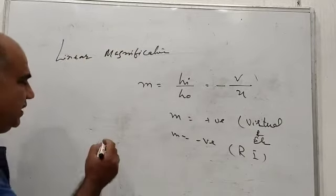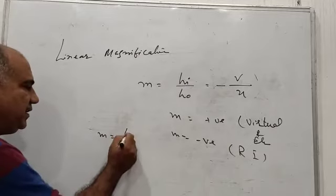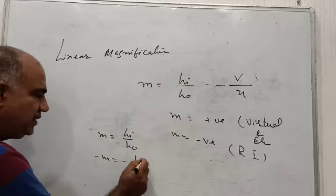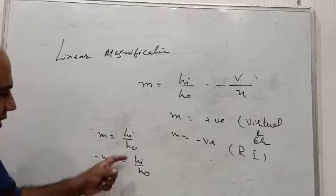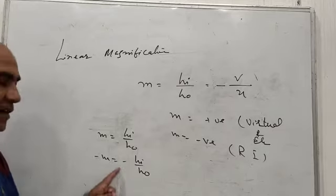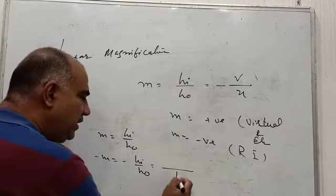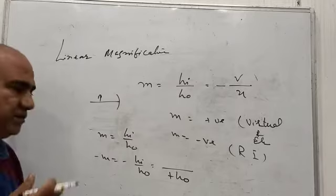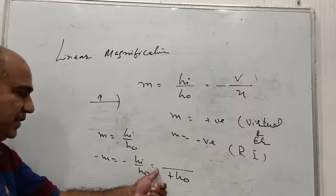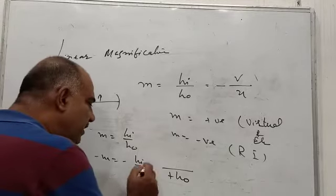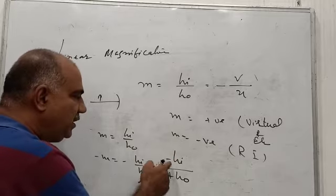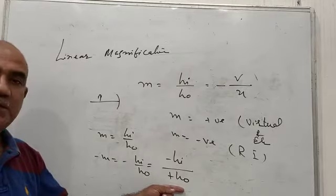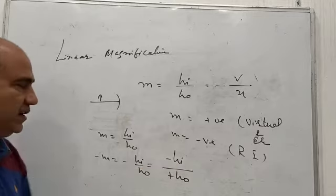Why is this so? Let's see. M equals HI upon HO. If M is negative, then HI upon HO is negative. The only thing to note here is that HI upon HO is a fraction that is negative. This is negative even when HO is positive, because the object is always kept above the principal axis and the height of the object is taken as positive — as we have seen in sign convention. So HO is positive, yet the fraction is negative. That means, undoubtedly, the height of the image has to be negative.